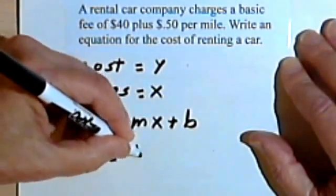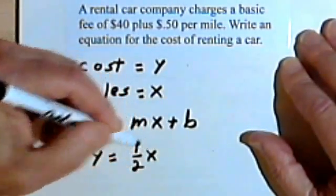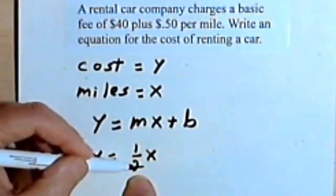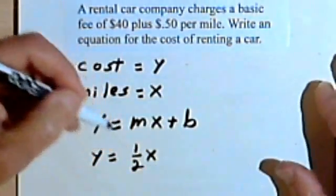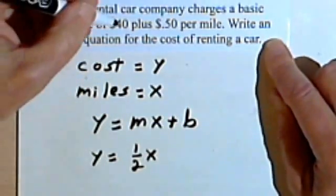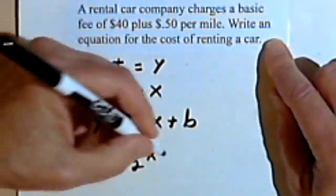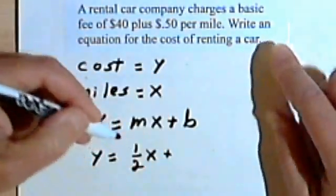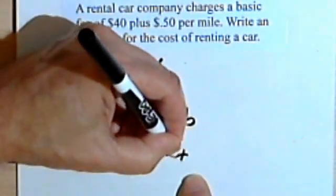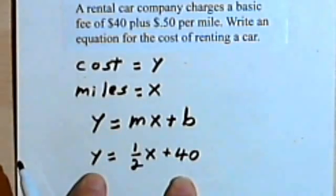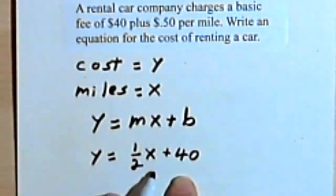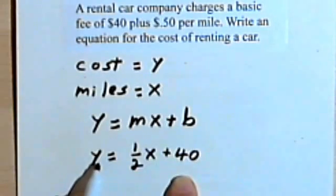So I can write y equals one-half x. In other words, a half a dollar for each mile will increase the cost. And the other thing that goes into the cost is the basic forty dollars. So the forty dollars is going to be my b. And basically this is going to be the equation y equals one-half x plus forty, where x is the number of miles driven and y is the cost.